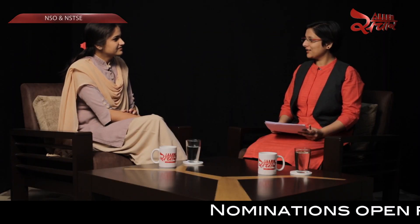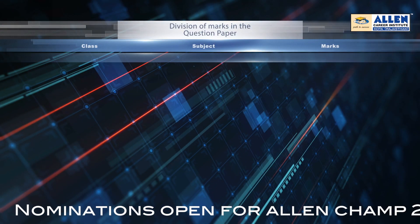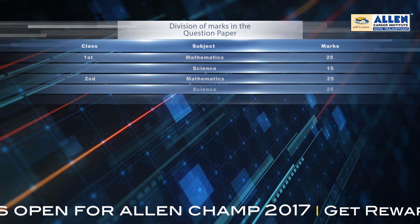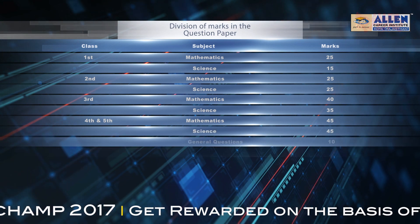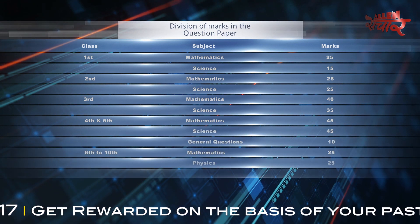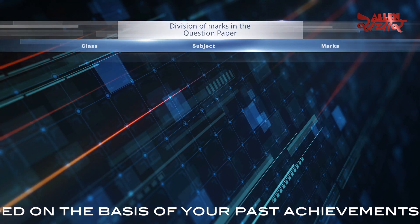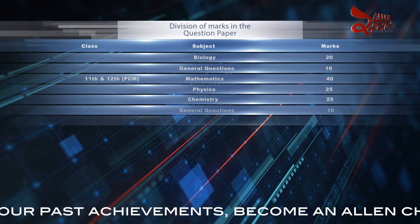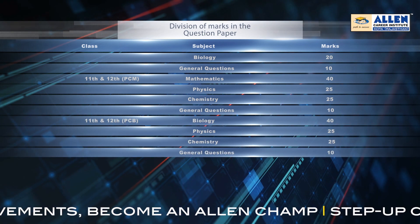What is the exam pattern for NSTSE? For class 1st, 2nd, and 3rd, mathematics and science subjects are covered. For class 4th and 5th, mathematics, science, and general questions are asked. For class 6th to 10th, mathematics, physics, chemistry, biology, and general questions are asked. For class 11th and 12th, physics, chemistry, and general questions are asked, while mathematics and biology depend on the stream of the student.